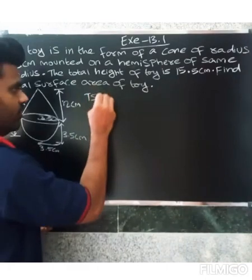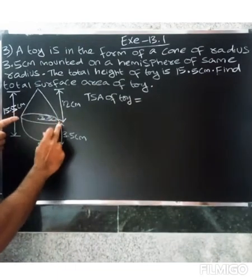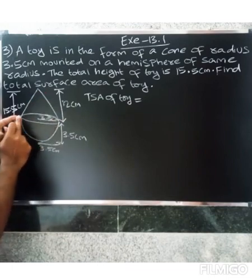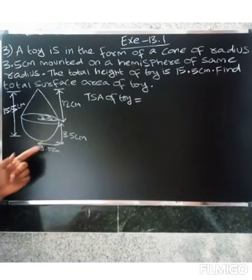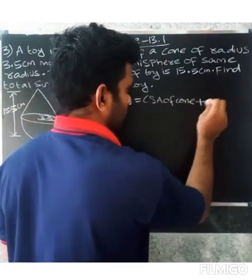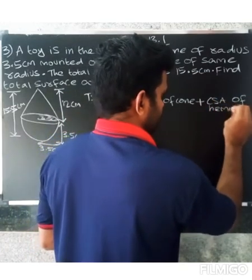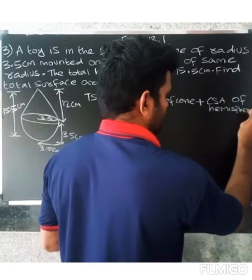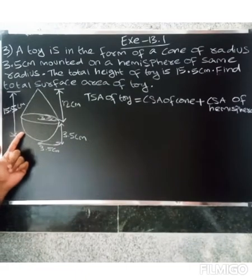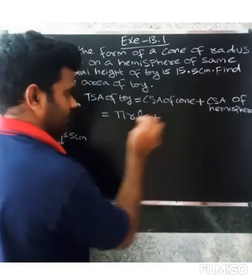The total surface area of the toy consists of the outer part of the cone and the outer part of the hemisphere. The formula is: total surface area equals curved surface area of cone plus curved surface area of hemisphere, that is πrl plus 2πr².